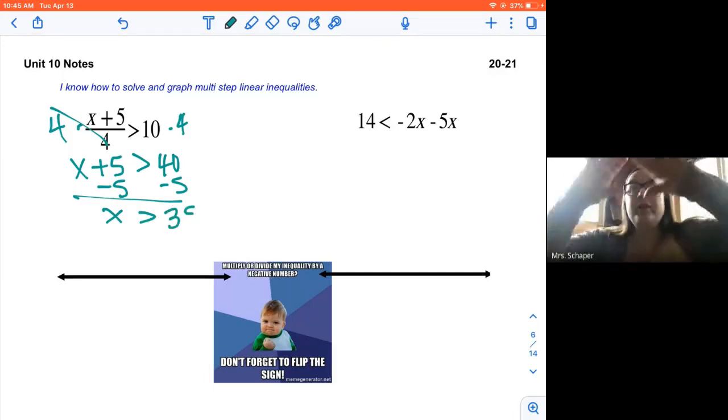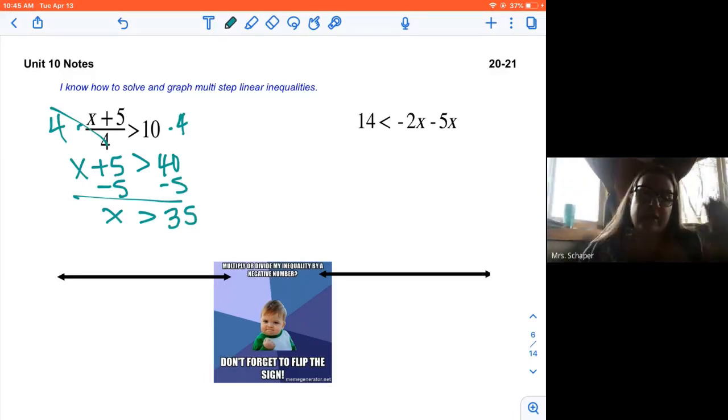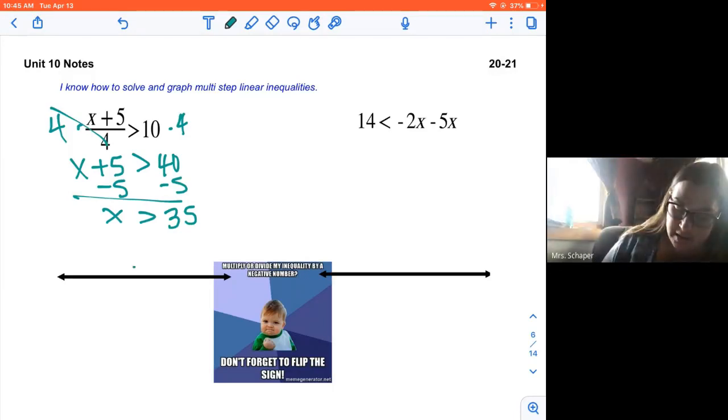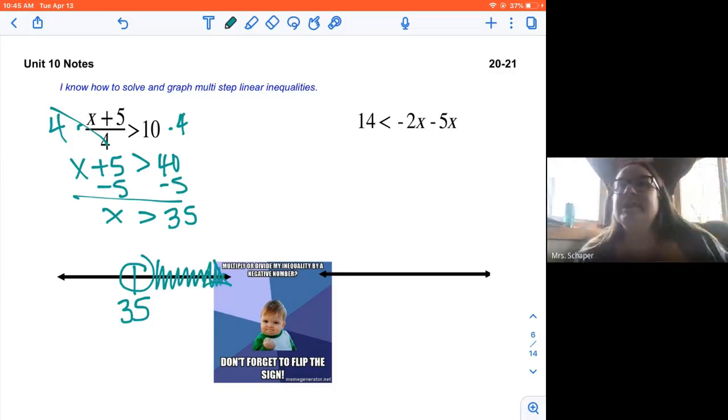So the fraction bar is a grouping symbol. So I have the numerator and I have the denominator. And so I multiply both sides by the denominator. And then from here, it's going to be an open dot because it's greater than not greater than or equal to 35 is the magic number. That's what goes there. And then we shade to the right. It's more than that.